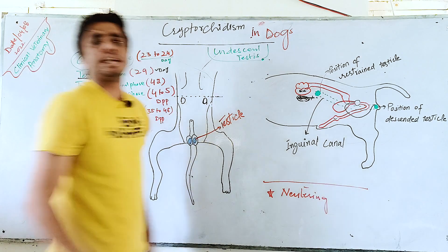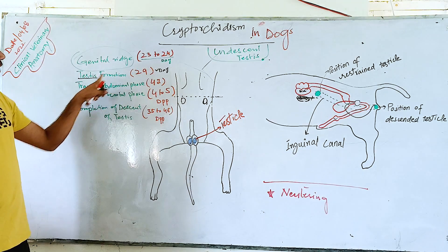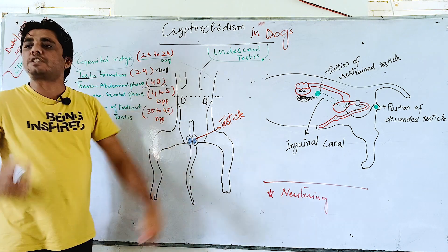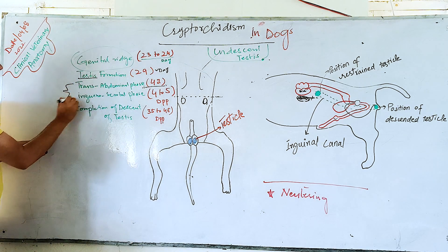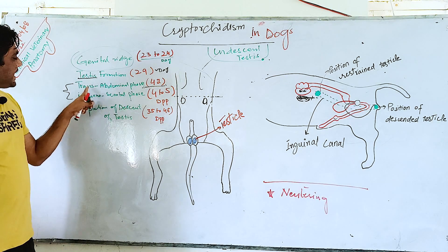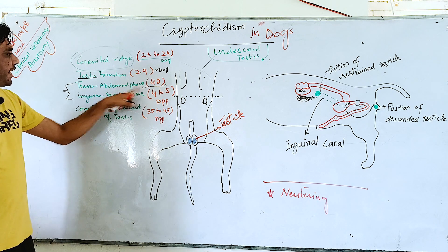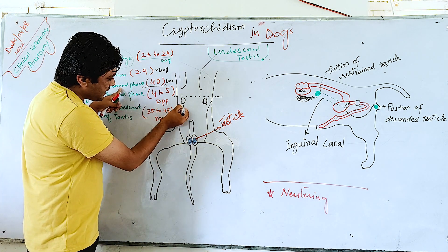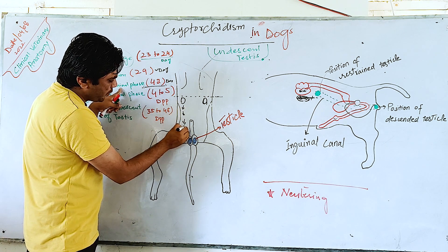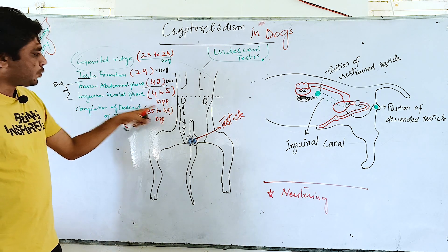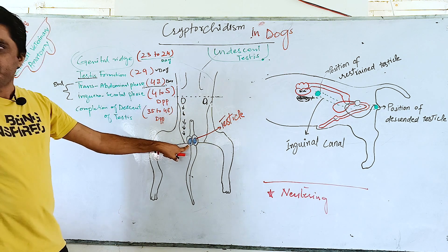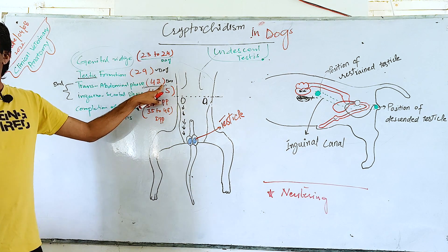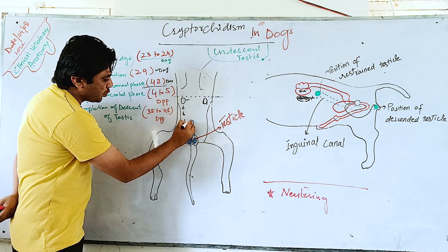After the formation of the testis, on day 42 the procedure known as descent of testis starts. The descent of testis has two phases: the transabdominal phase and the inguinal-scrotal phase. The transabdominal phase starts on day 42 in dogs. In this phase, the testis will move from the site of development towards the scrotum — many hormones and structures are involved. The testis moves from the site of development up to the inguinal canal.